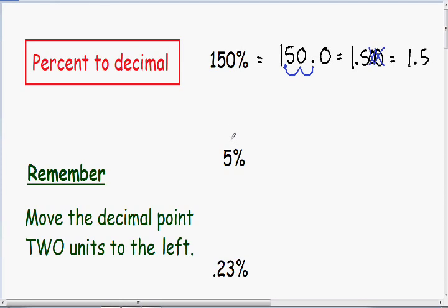So let's move on to our next example. Here we have 5 percent. The first thing I'm going to do is rewrite it with a decimal point — 5 percent is certainly the same as 5.0 percent. When changing from a percent to a decimal, we need to move our point two units to the left: one, two. Notice after we moved our decimal point two units, we have one empty space. That's okay — whenever you have an empty space, just add a zero. After you move your decimal point, you can erase your percent sign.